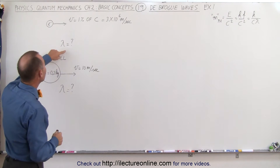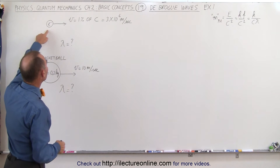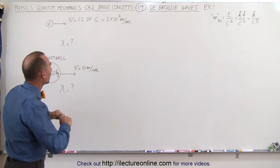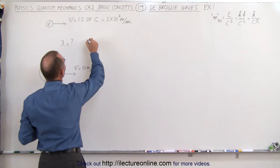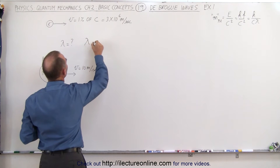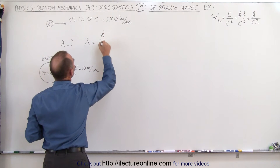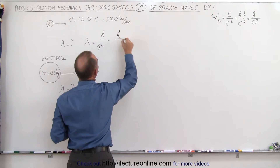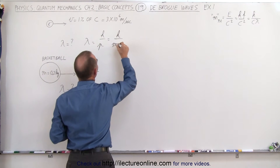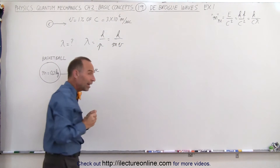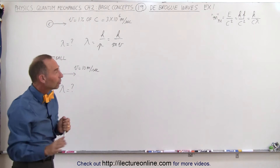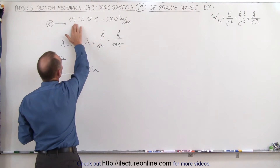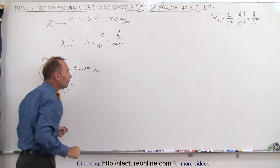So what is the wavelength of an electron moving at 1% the speed of light? We know that the equation says lambda is equal to h divided by the momentum, or h divided by the mass times velocity. In this case we do not need to worry about relativistic effects because the velocity is only 1% the speed of light.